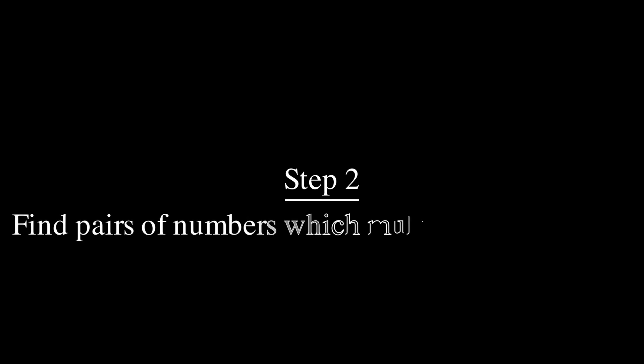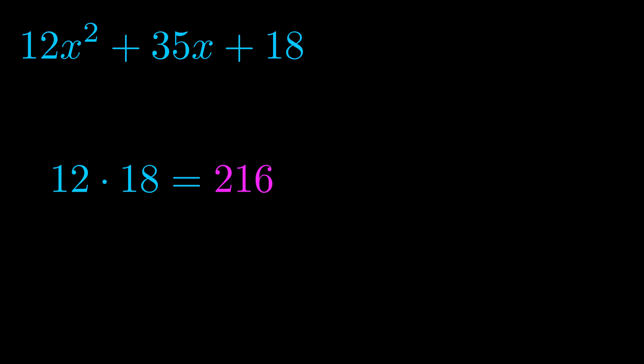Step two is to try to find all of the pairs which multiply to this number. Now it turns out you don't really need to find all of them but go ahead and write down as many numbers as you can that multiply to the magenta value for now. Pause the video and resume when you're ready to continue.